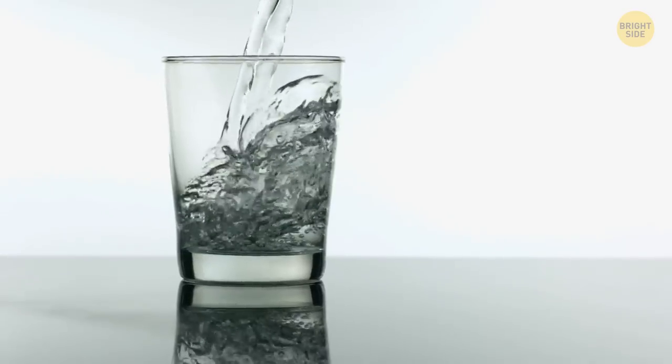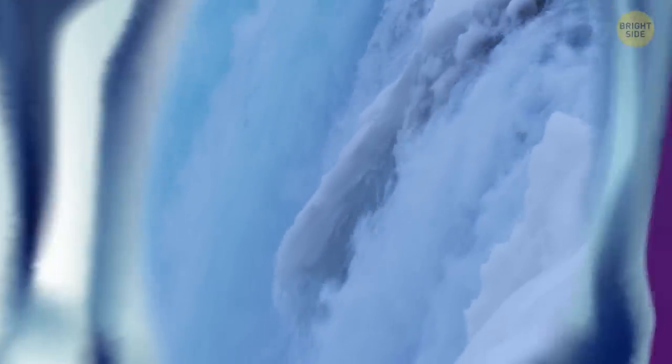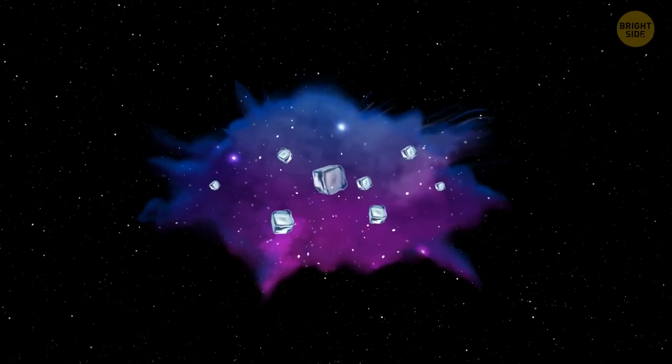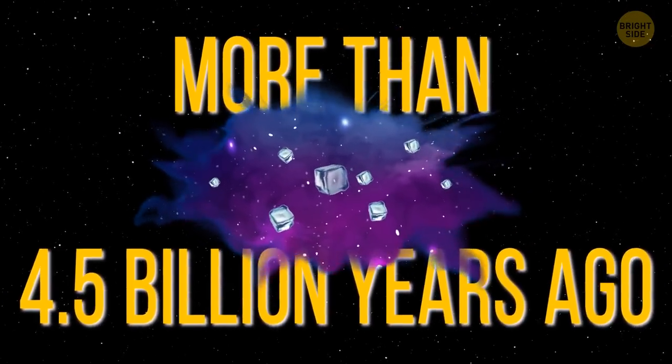We might be drinking water older than our solar system. Some scientists think the water we have on Earth may have come from ice specks that were floating in some sort of a space cloud more than 4.5 billion years ago.